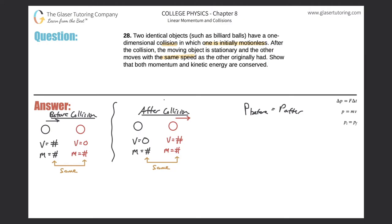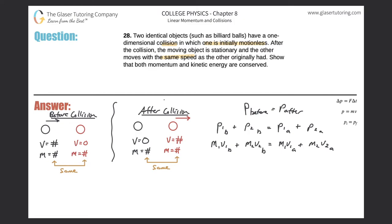We're going to have four items in this formula: the momentum of the first object before the collision plus the momentum of the second object before the collision equals the momentum of the first object after the collision plus the momentum of the second object after the collision. Since momentum equals mass times velocity, this becomes: m1·v1_before + m2·v2_before = m1·v1_after + m2·v2_after.